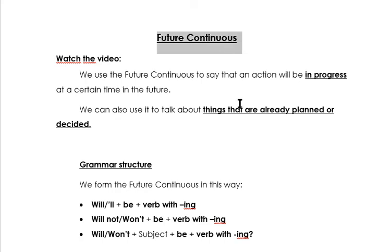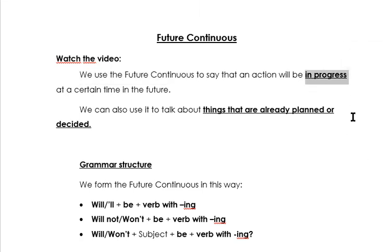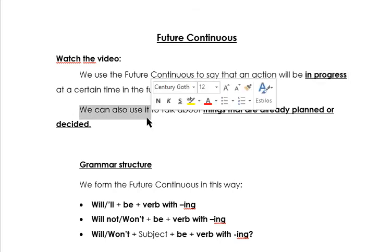Here we have the future continuous. We use the future continuous to say that an action will be in progress at a certain time in the future. Para una acción, una actividad, que va a estar en progreso, o sea, que se va a estar realizando en el futuro en un cierto momento.